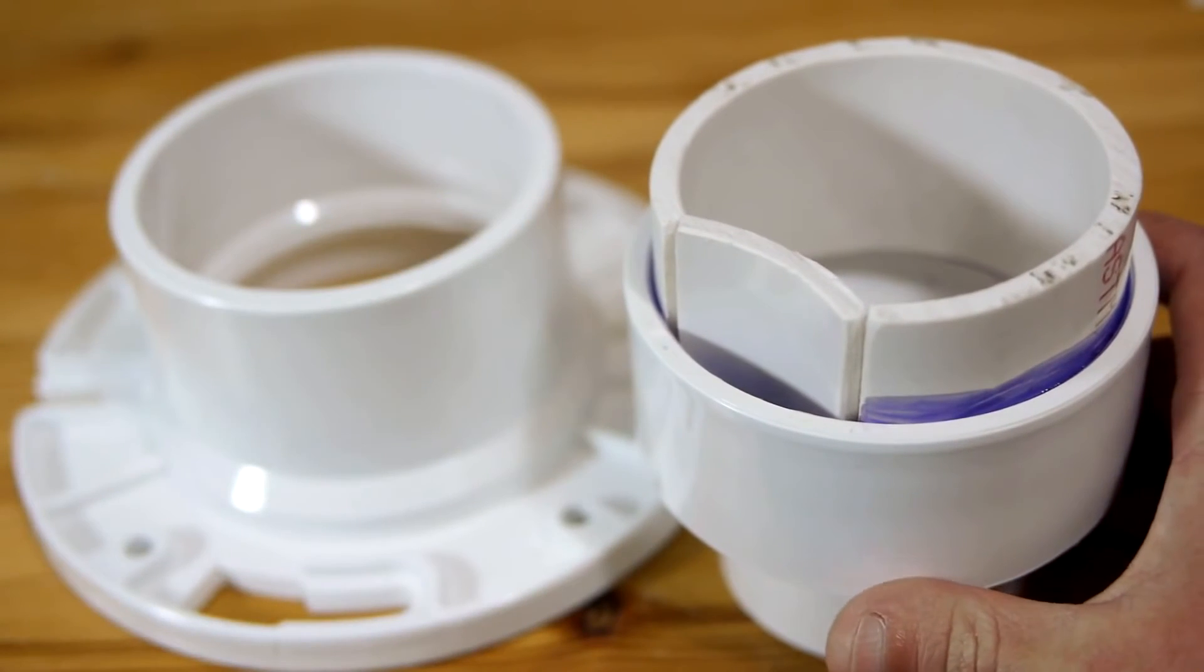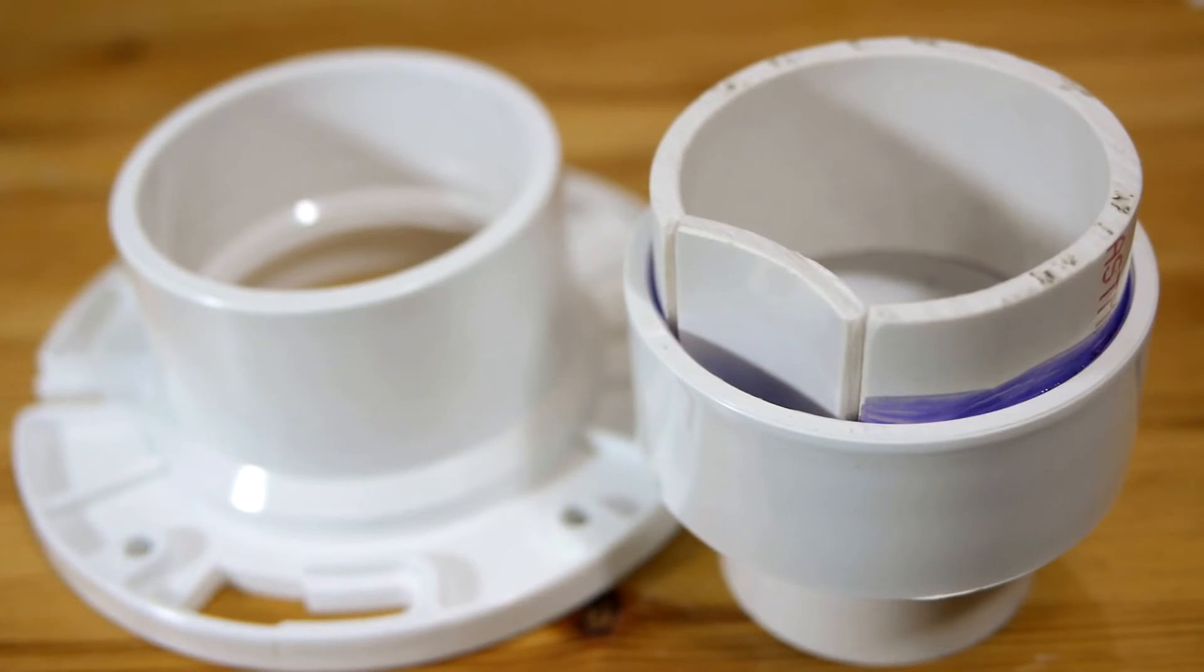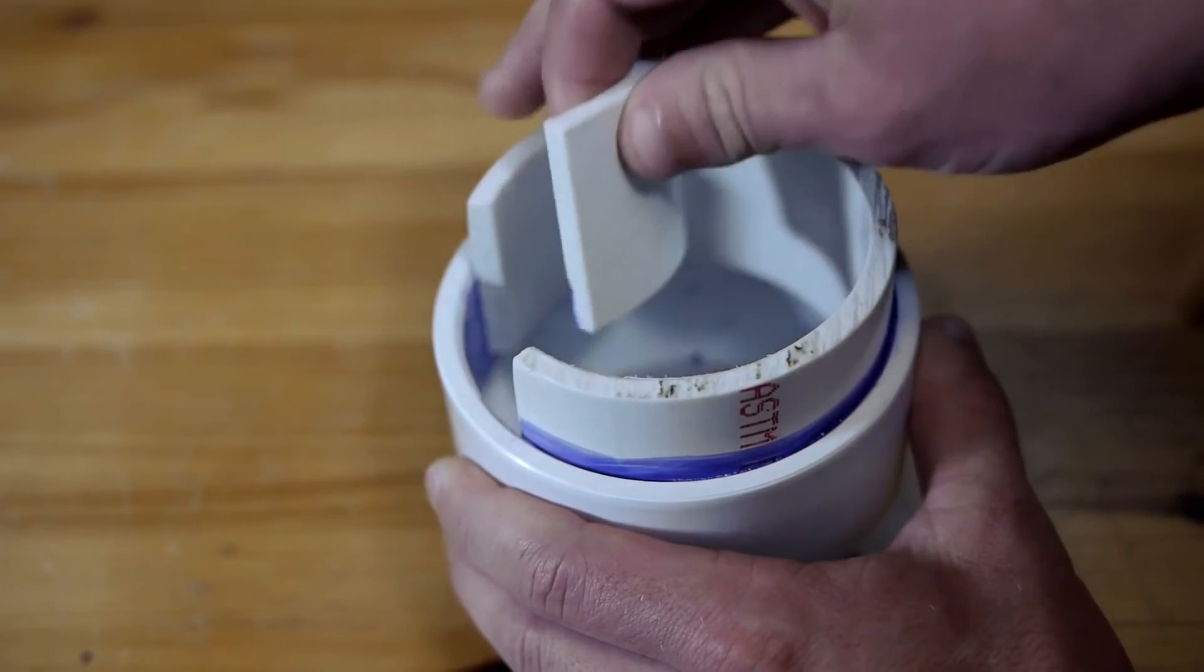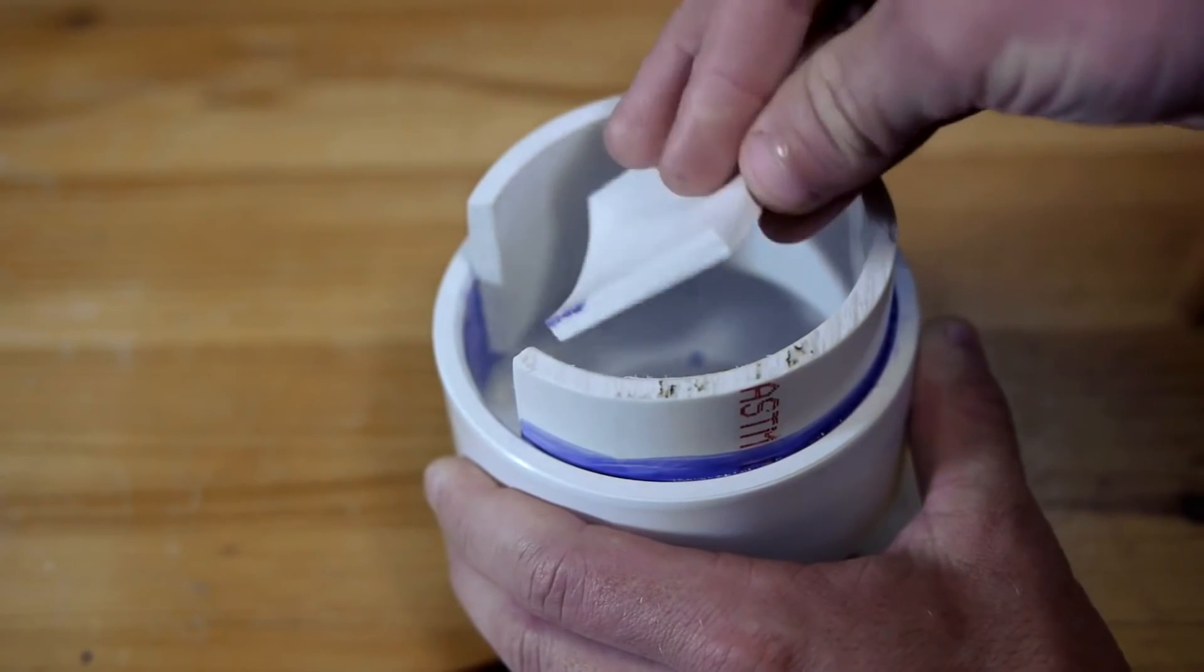After an hour or so, the glue should cure enough to hold the pipe open on its own so the backwards section can be removed. It should come out easily since placing it in backwards caused it to only touch the adapter at the edges.